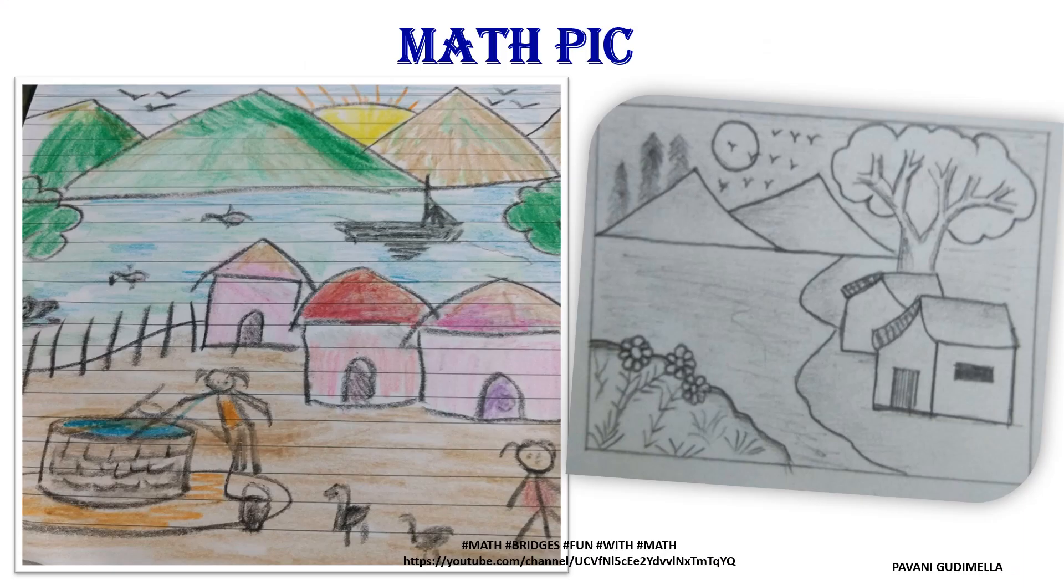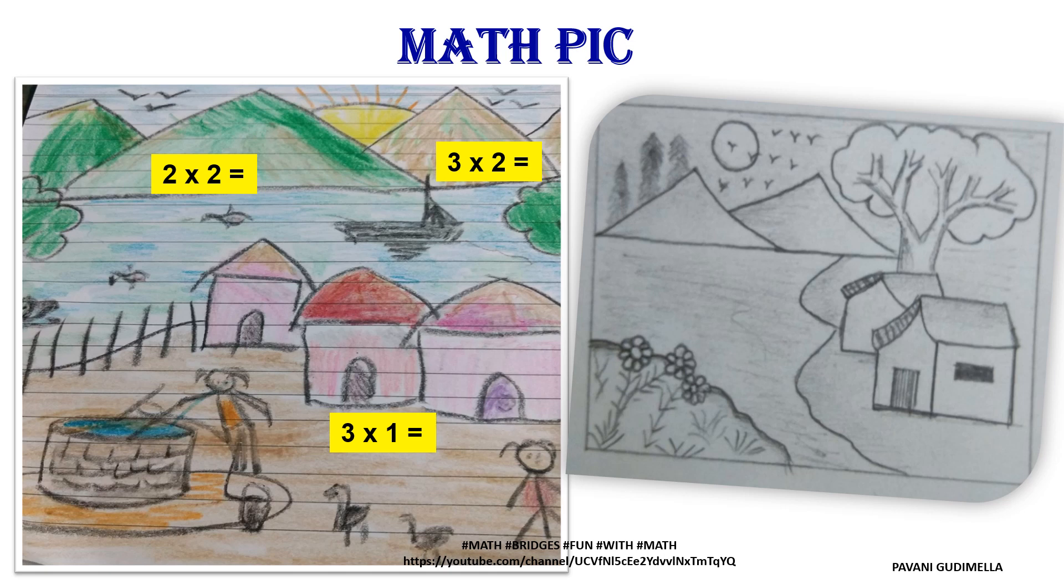Here are some of the samples which the children have done. Math Pic. Based on the village scenery itself, you can see here: 2 twos are 4 mountains, 1, 2, 3, 4 mountains. 3 ones are 3 houses. 3 twos are 6 birds. And in the other one also, 5 twos are 10 birds. Many instructions you can give. And you can explore the creativity and make them to learn the tables with great enthusiasm.